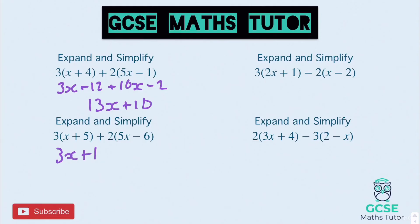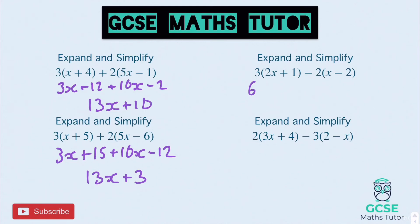The second question: expanding gives 3x plus 15, plus 10x minus 12. Tidying up gives 13x, and 15 take away 12 is positive 3, so 13x plus 3. Top right: 3 times 2x is 6x, and 3 times 1 is 3. Then we have a negative: minus 2 times x is minus 2x, and minus 2 times minus 2 is positive 4.